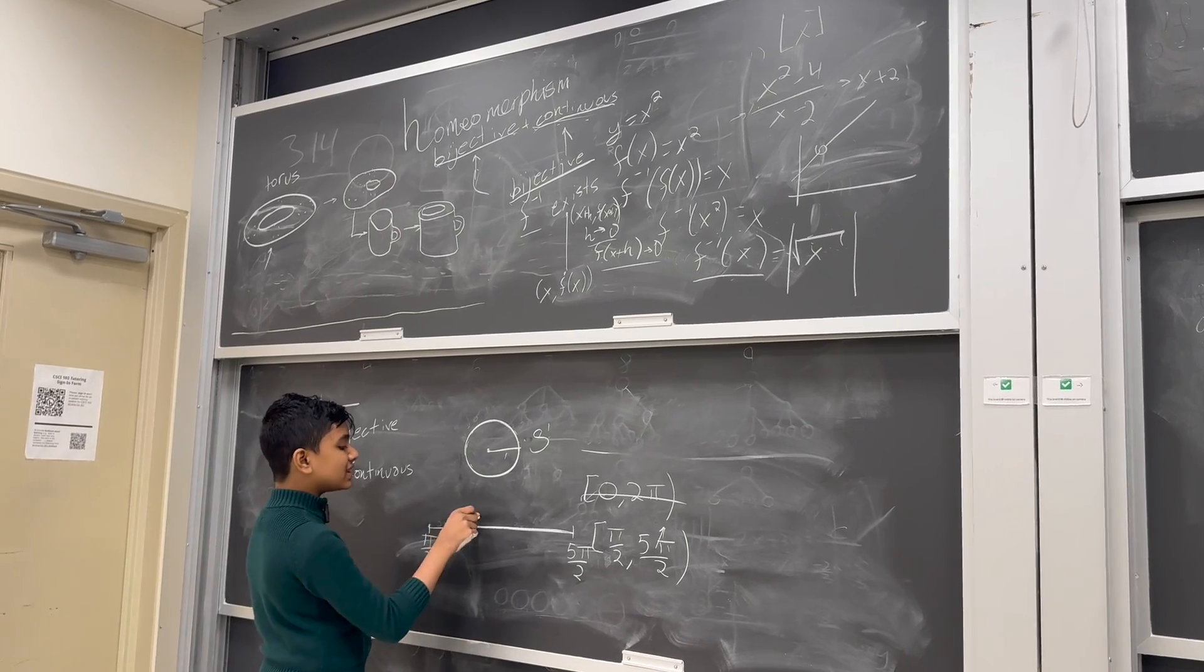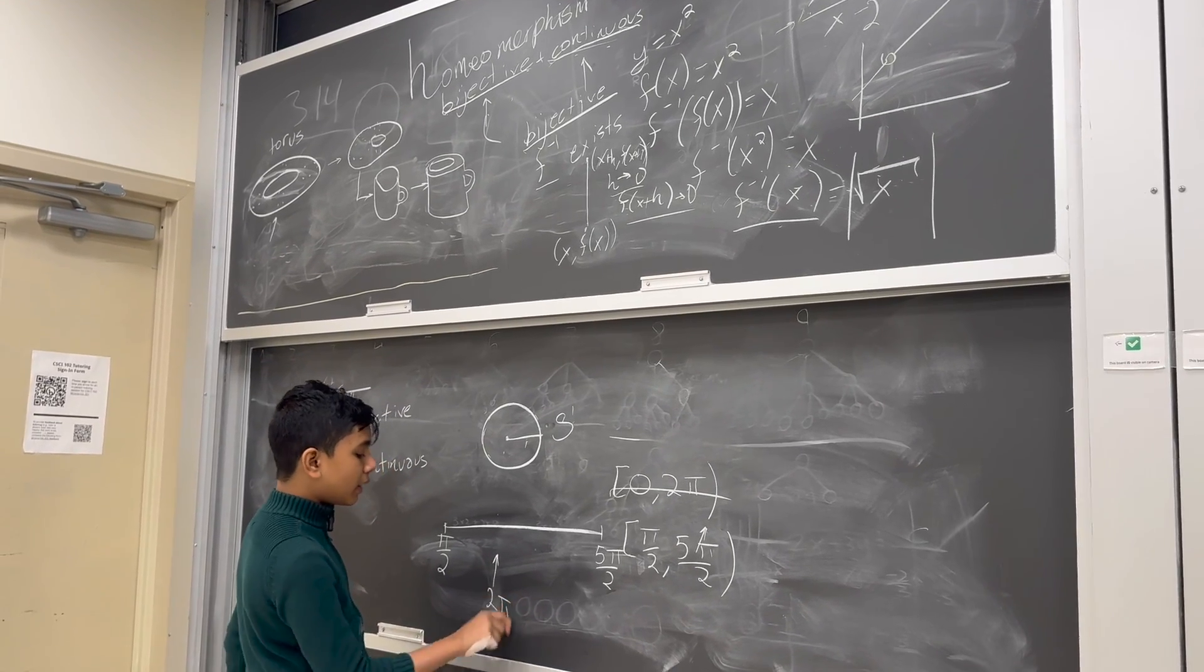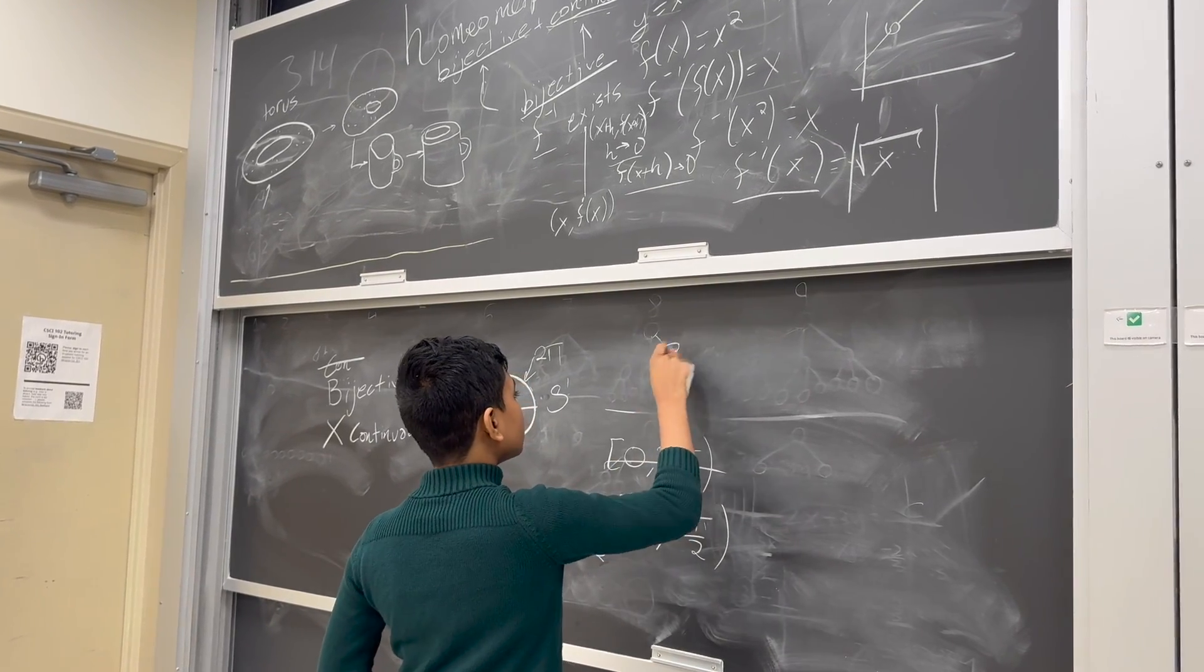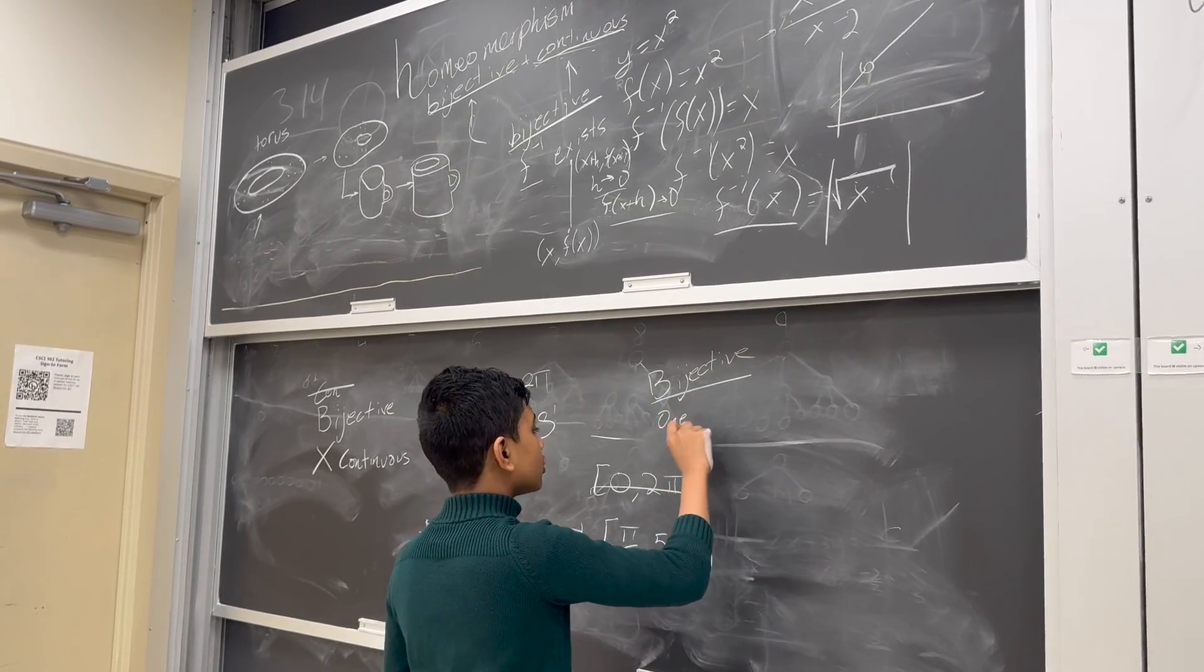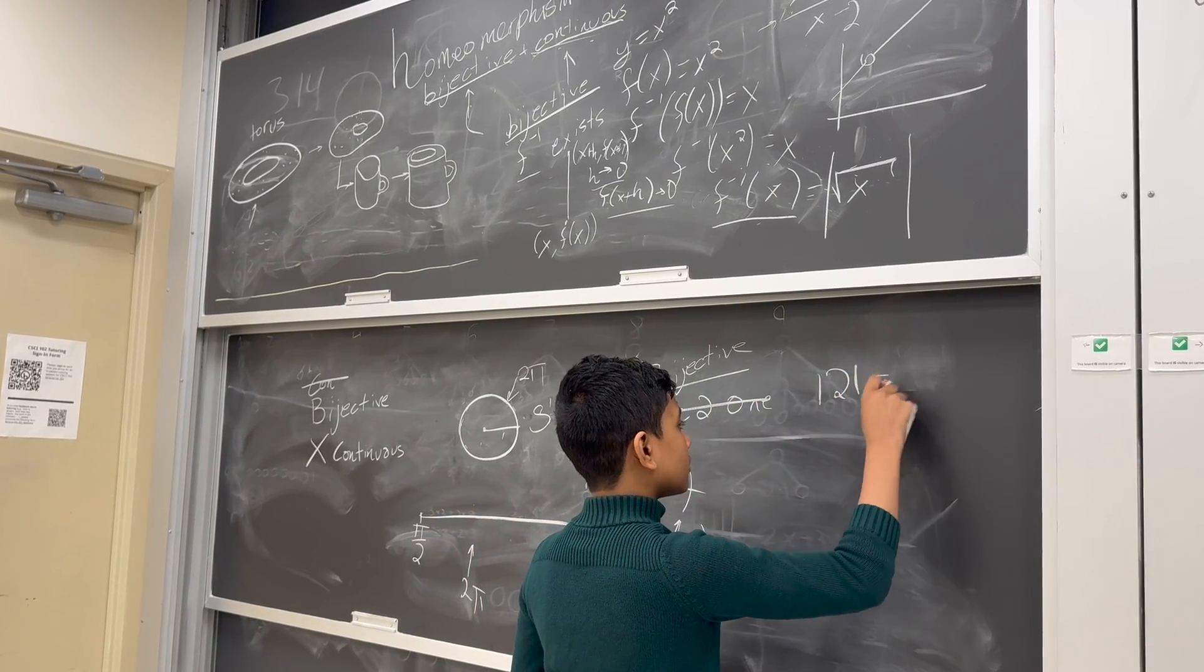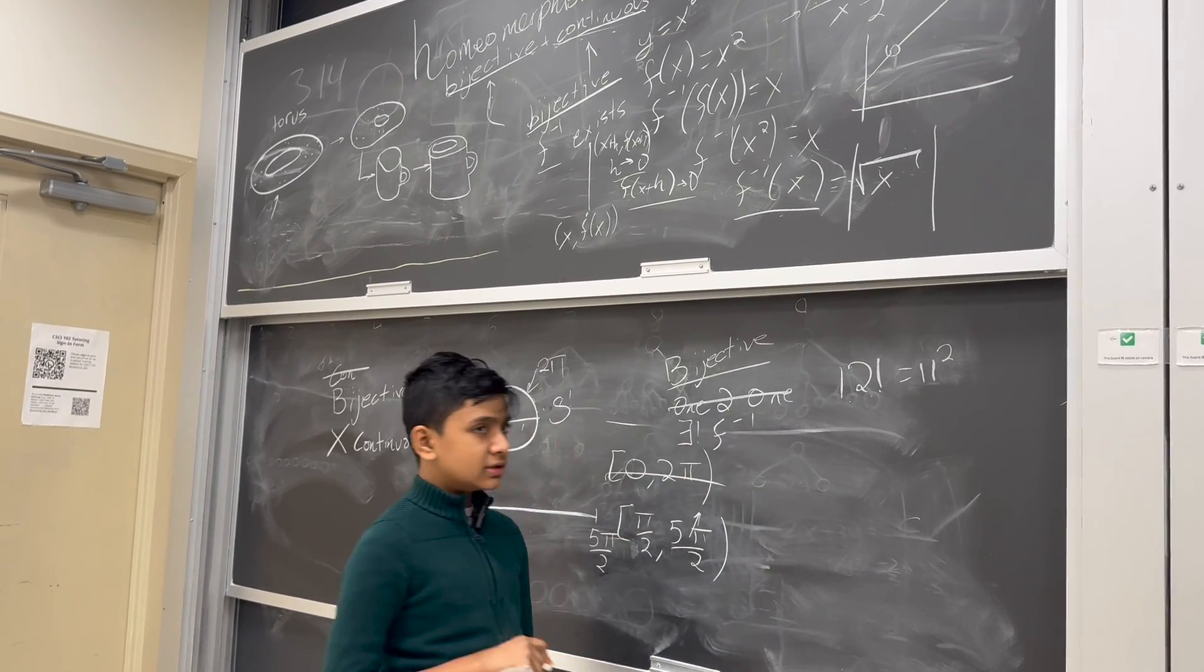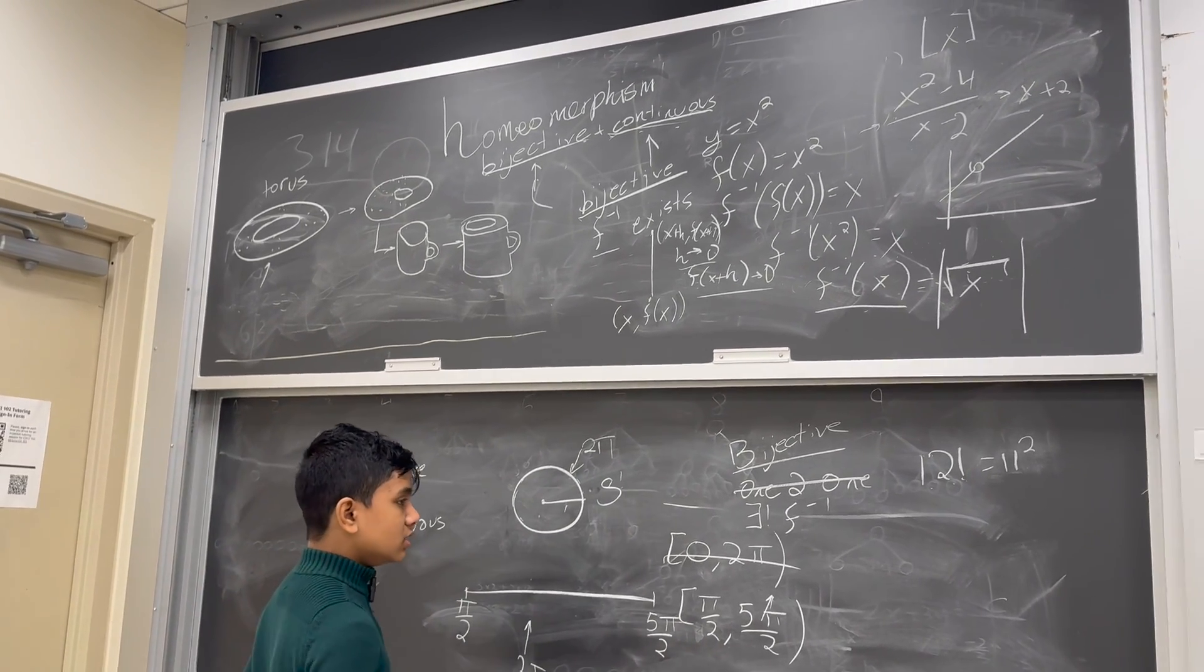So now, how do we map this to that? Well, obviously, they're the same amount of points, and this has a length 2 pi, and this has circumference 2 pi. So everything matches up there. It's 1 to 1, which is part of the requirement for a bijective function. 1 to 1, and f inverse must also exist.